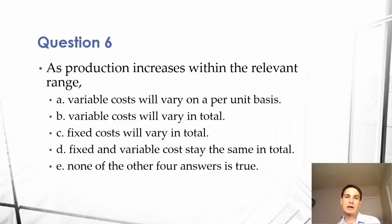A, variable costs will vary on a per-unit basis, B, variable costs will vary in total, C, fixed costs will vary in total, D, fixed costs and variable costs stay the same in total, or E, none of the four answers is true.